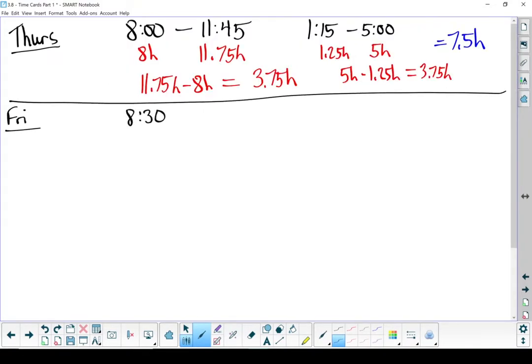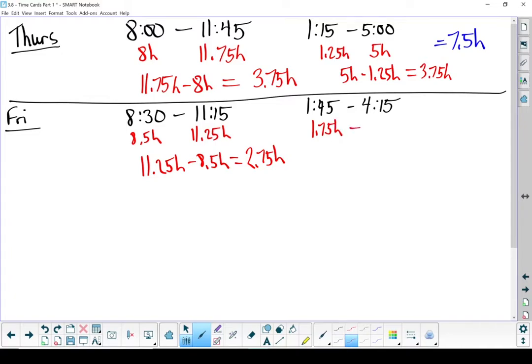Friday. Looks like Jade had a nice long lunch hour and got off early at the end. Turn those into hours. 8 hours and 30 minutes is 8.5 hours. 11 hours and 15 minutes is 11.25 hours. Subtract the 2, remember taking the second one first. 11.25 take away 8.5 should give me 2.75 hours. Doing the same thing with the afternoon shift. 1:45 should be 1.75 and 4:15 should be 4.25. Subtract the 2, we get 2.5 hours. Add them together, we end up with a total of 5.25 hours. Jade didn't get that many hours in on Friday.